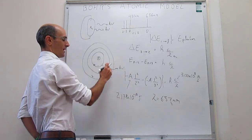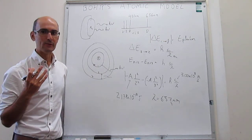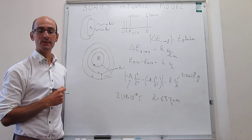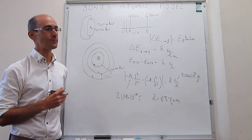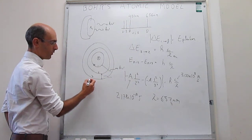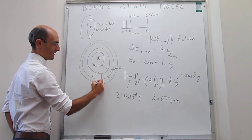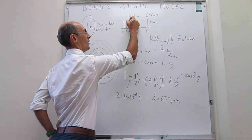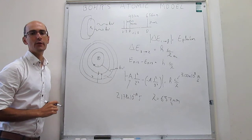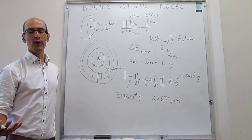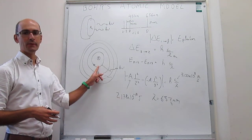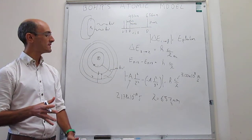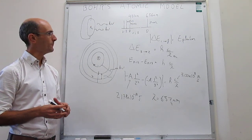Bohr's hydrogen atom model works very well to explain the experimental spectrum. You get all of the lines by calculating transitions between all levels. The visible lines all come from transitions that end in n=2: the line from 3→2, 4→2, 5→2. There are other lines in the ultraviolet from transitions ending in n=1, but we don't observe those without a UV detector. The visible ones correspond to transitions ending in the second orbit.